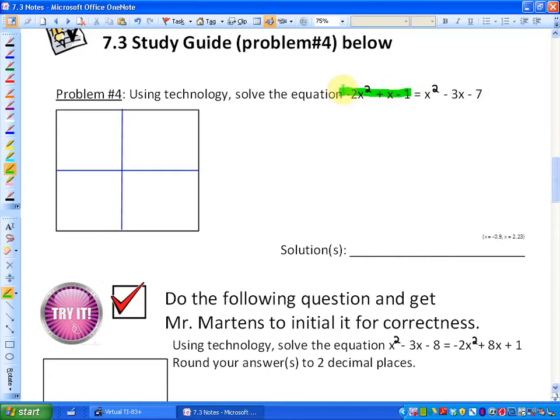In this question, we're asked to determine where, or what values of x would make the left side equal to the right side. Not equal to 0 in this case—a little bit of a different approach but quite similar.